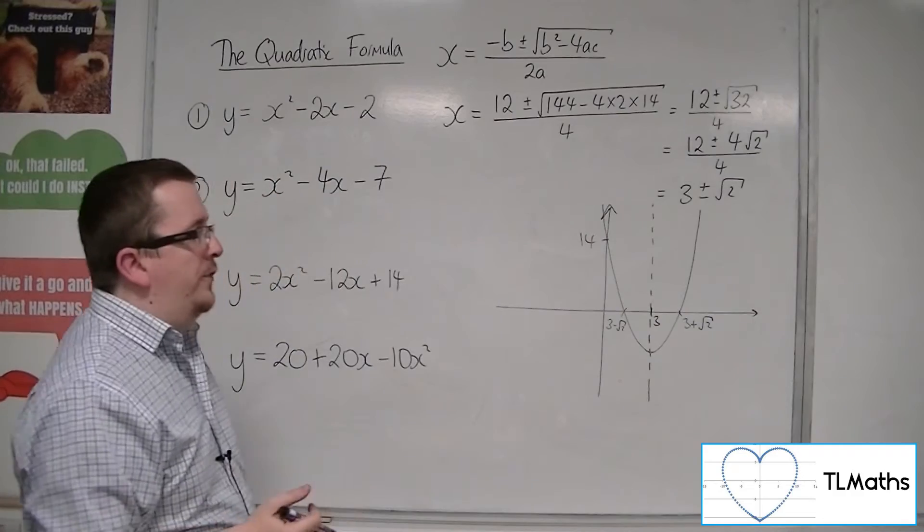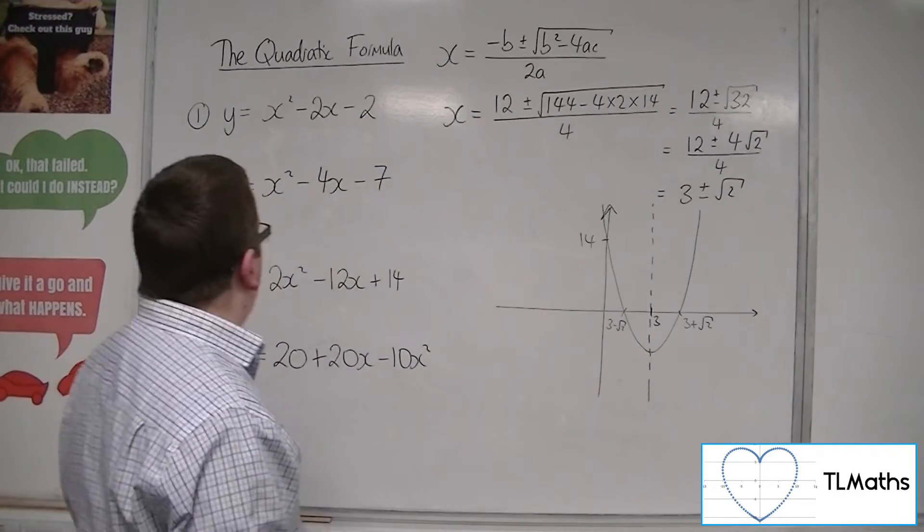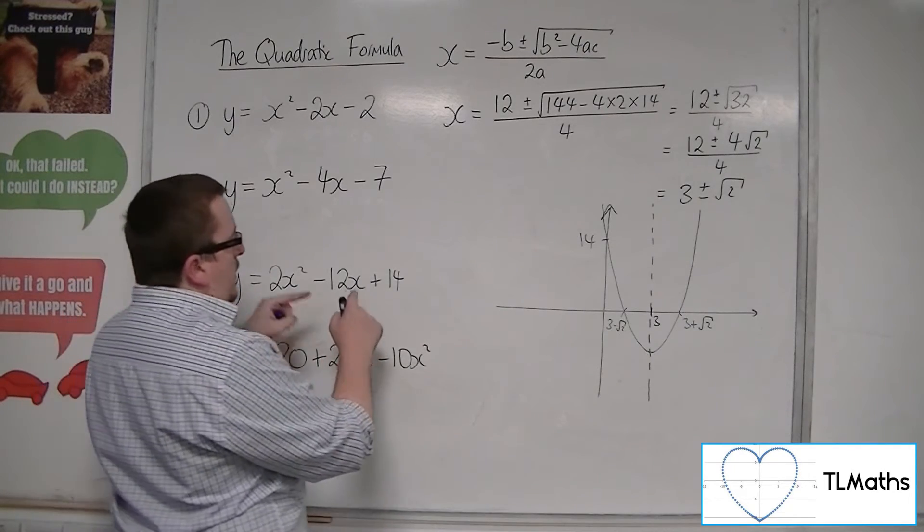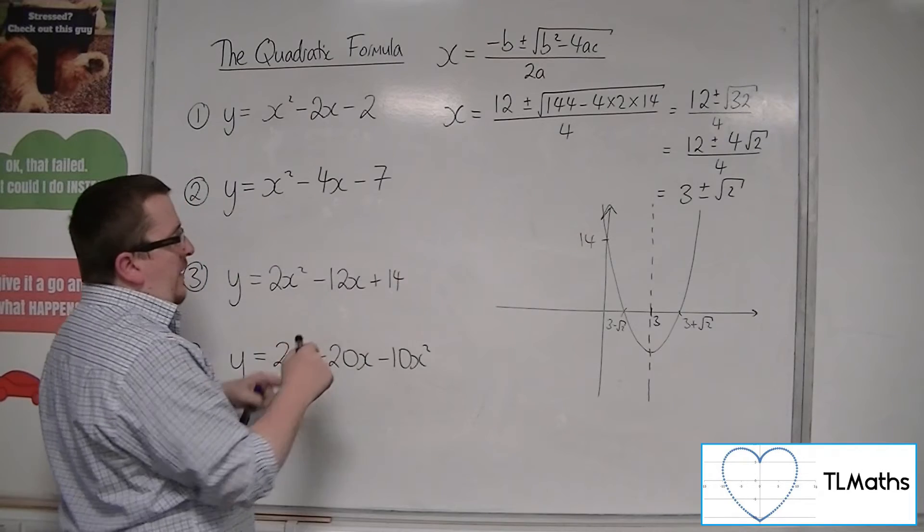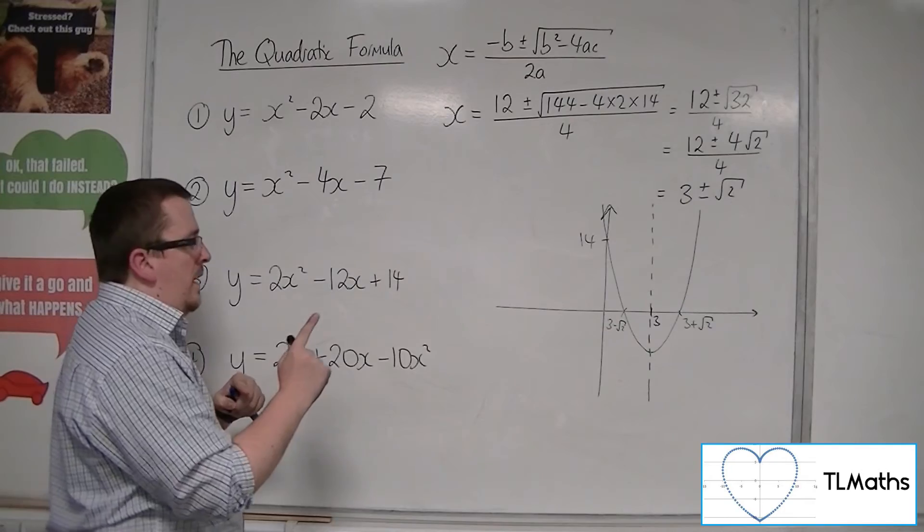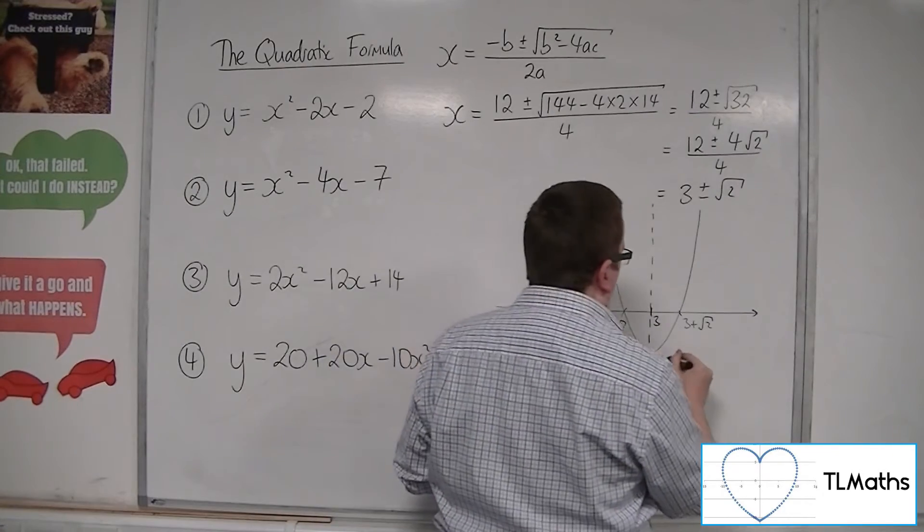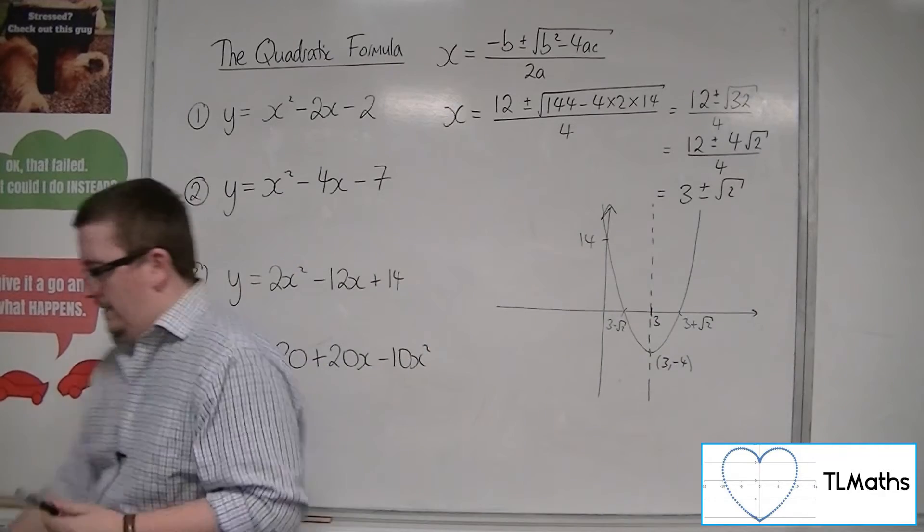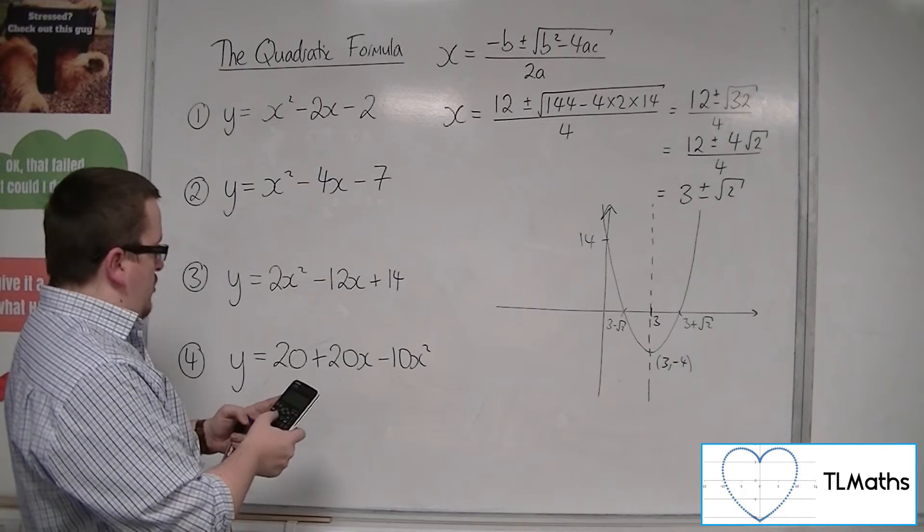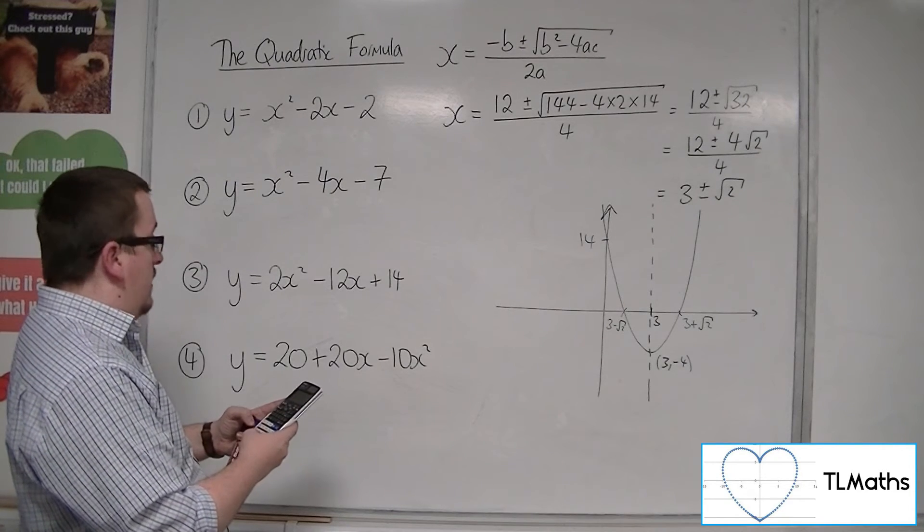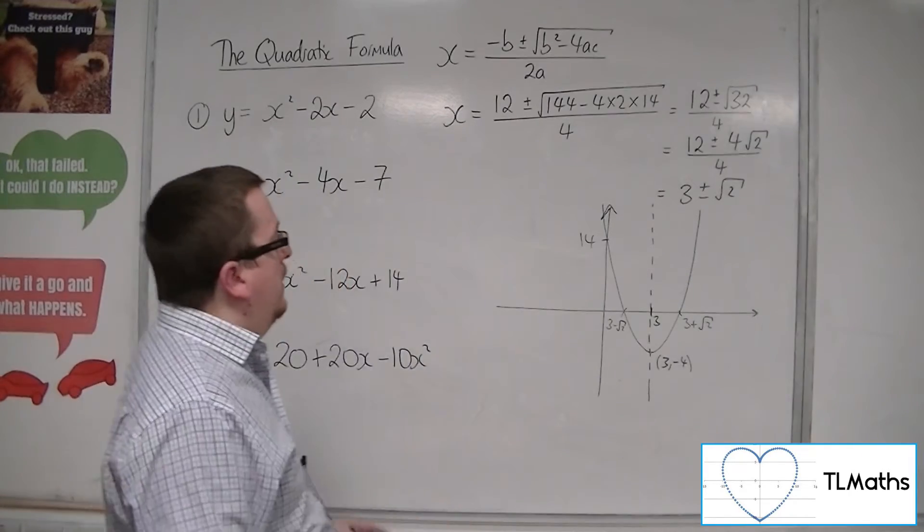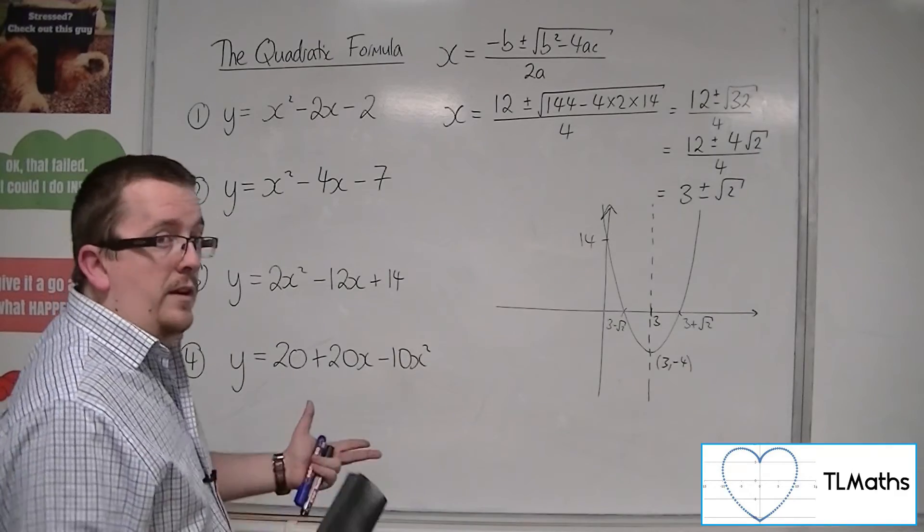And you can work out the coordinates of the vertex. That's where x is 3. So 2 lots of 9, so 18, take away 36. So 18, take away 36 is minus 18. Plus 14 is minus 4, I think. I'm just going to check that. There are limits to how much I trust my mental arithmetic. Oh, minus 4. OK, so that was all right. So yeah, that's what the parabola would look like in this case.